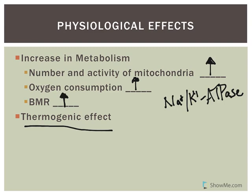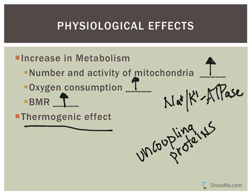Thermogenic has to do with heat. Not all the energy from the breakdown of fuels like fat and carbohydrates results in ATP production — a lot of that energy is lost as heat. Thyroid hormones increase uncoupling proteins, which cause you to produce less ATP from fuel. When that happens, energy is lost as heat, because energy cannot be created nor destroyed — it just changes form. So you end up with a lot more heat production and an overall increase in metabolism in virtually all cells.